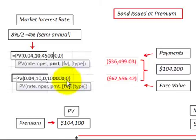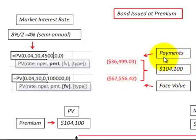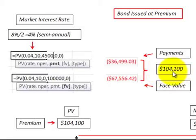Now for the present value of the principal amount — discounted back over 10 semiannual periods at the semiannual market interest rate of 4% — we get a present value of $67,566. Adding the present value of the payments and the present value of the principal, we get $104,100.